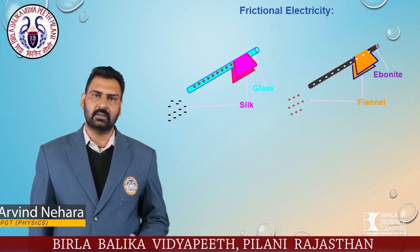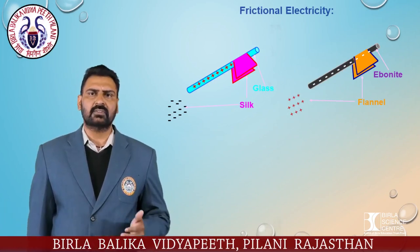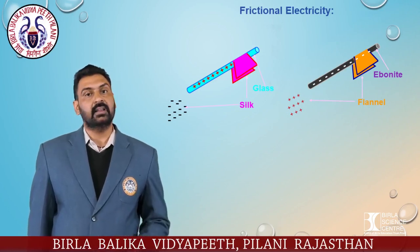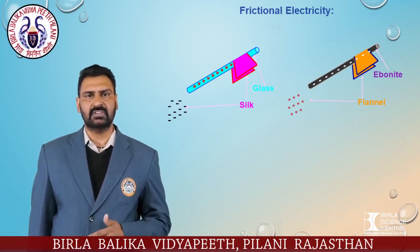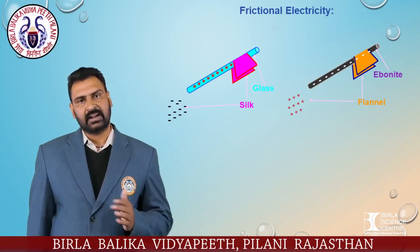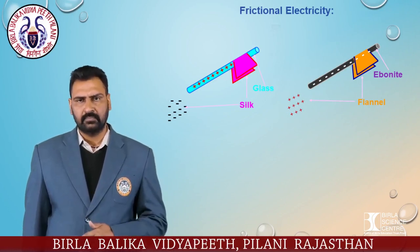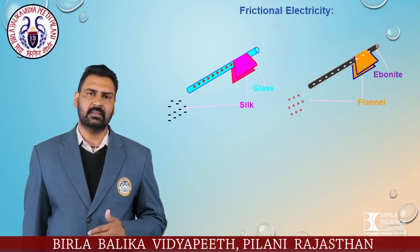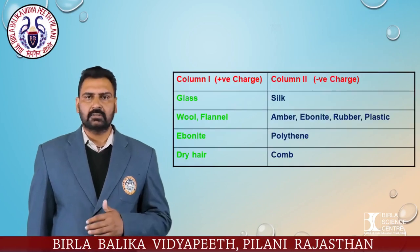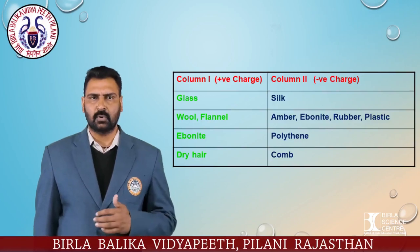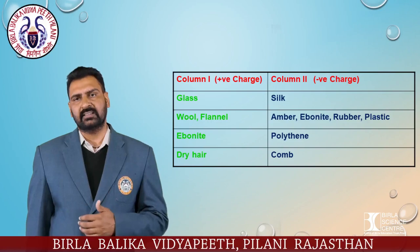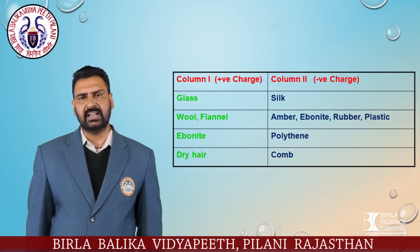It is very important to note that electrification of the body, whether positive or negative, is due to transfer of electrons from one body to another. If electrons are transferred from a body, the deficiency of electrons makes the body positive. If electrons are gained by a body, the excess of electrons makes the body negative. If two bodies from the following list are rubbed, the body appearing earlier in the list is positively charged, whereas the latter is negatively charged.